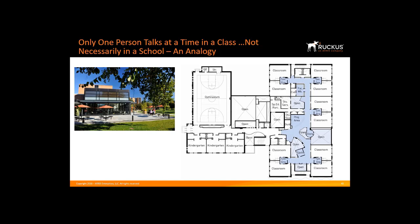In a school, we don't tell our students that only one person talks in a school. If someone in the next-door classroom or a faraway classroom talks, we don't tell them to be silent. We may hear some muffled sounds, but we have walls separating classrooms, so the audio from the adjacent classrooms is low and doesn't cause interference.